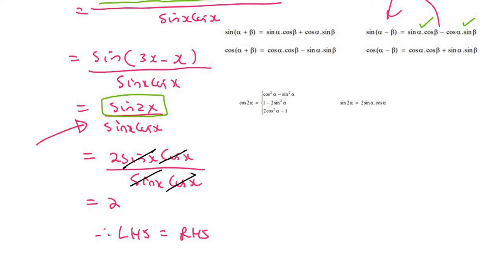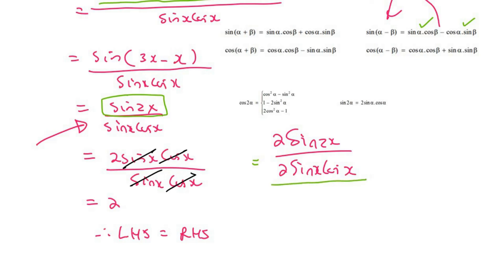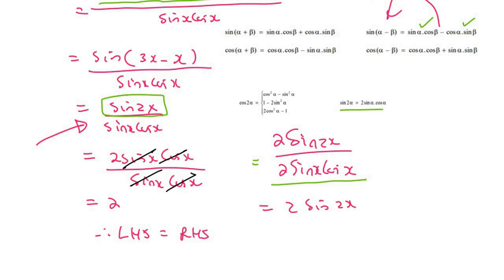At that step you could have done it in a slightly different way. You could use the method where you multiply the top and bottom by 2, and then this part you turn into sin 2x, giving you 2 sin 2x over sin 2x. Those cancel and you still end up with 2. Sometimes there's more than one way to do it, and you can choose whatever you're comfortable with.